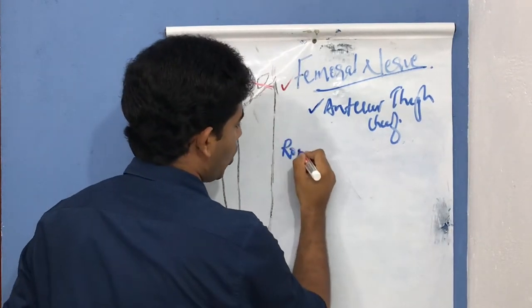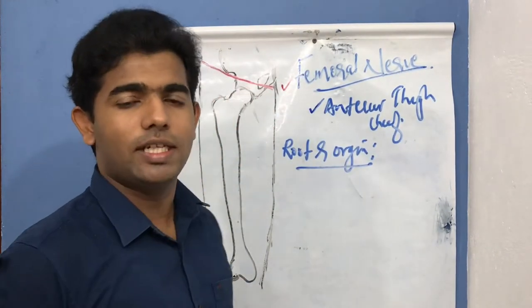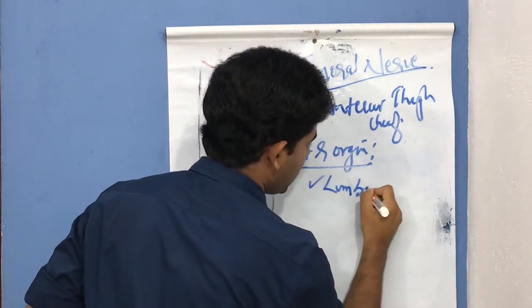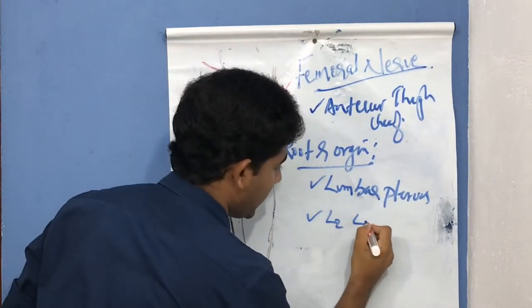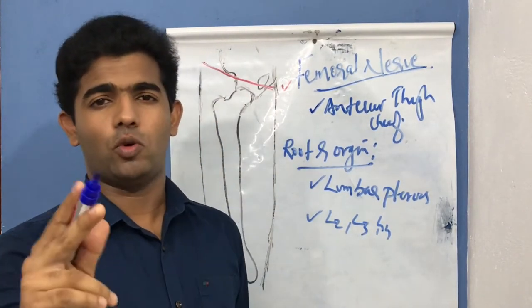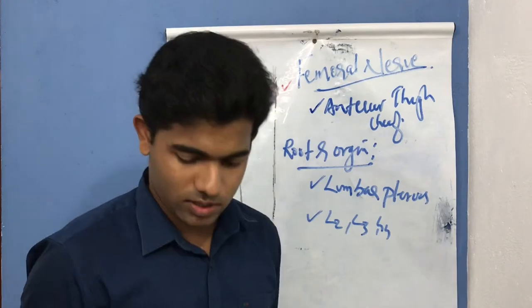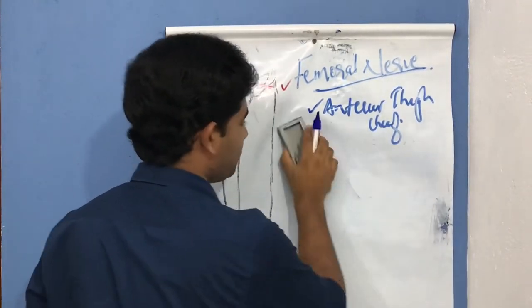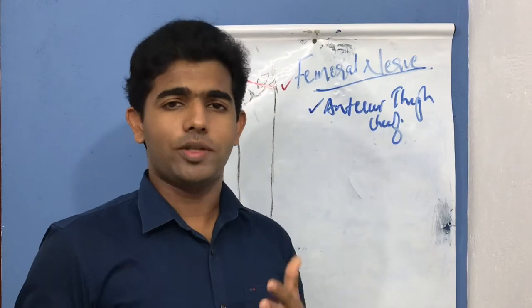As a nerve, it has a root value and an origin. The femoral nerve arises from the lumbar plexus, and its root value is L2, L3, and L4. Now we move on to the course of the nerve — a brief introduction covering its root value and origin.